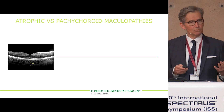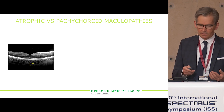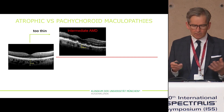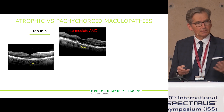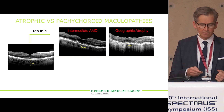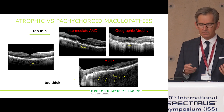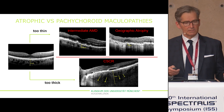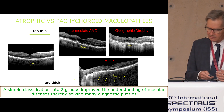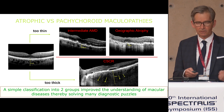Nowadays we have to distinguish between atrophic versus Pachychoroid maculopathy. A thin choroid is associated with intermediate AMD and geographic atrophy, and a thick choroid is associated with the Pachychoroid disease spectrum. This simple classification into two groups improved the understanding of macular disease, thereby solving many diagnostic puzzles.